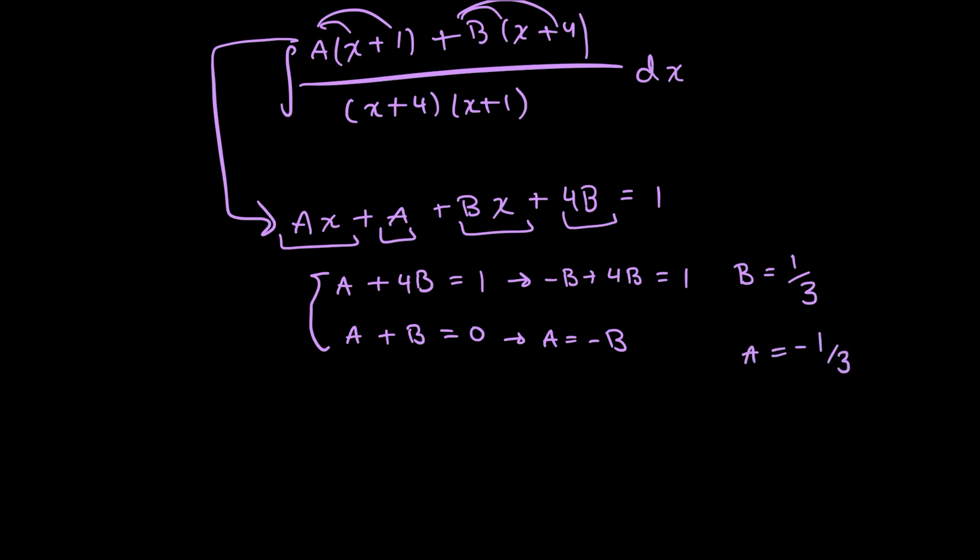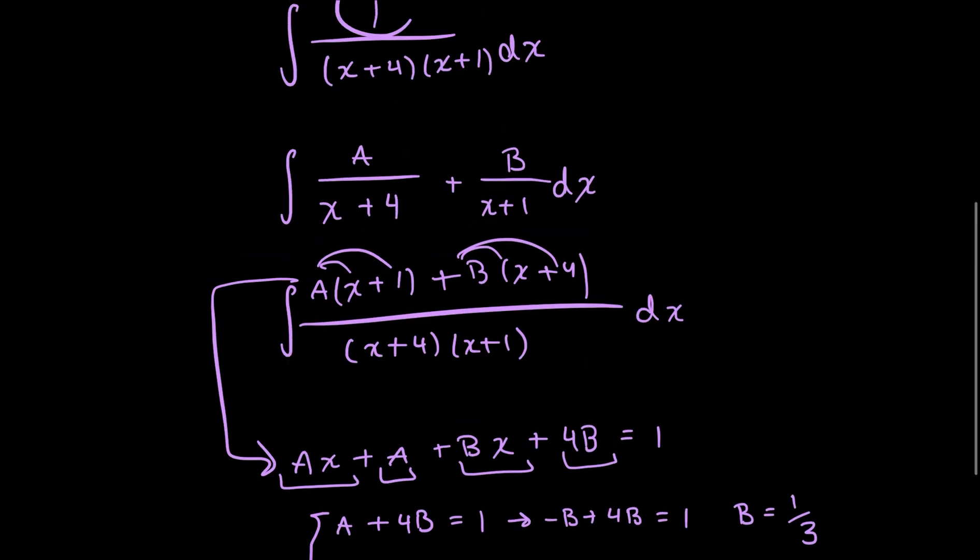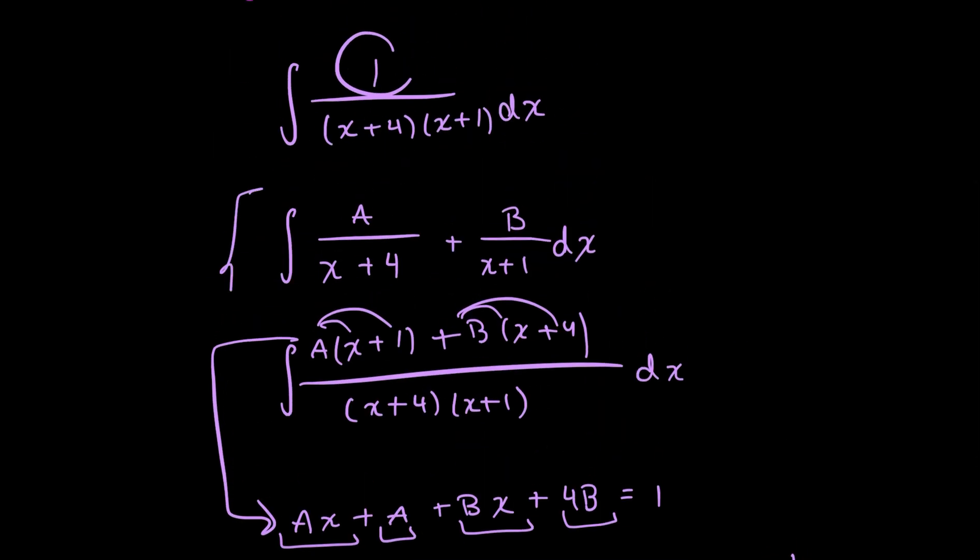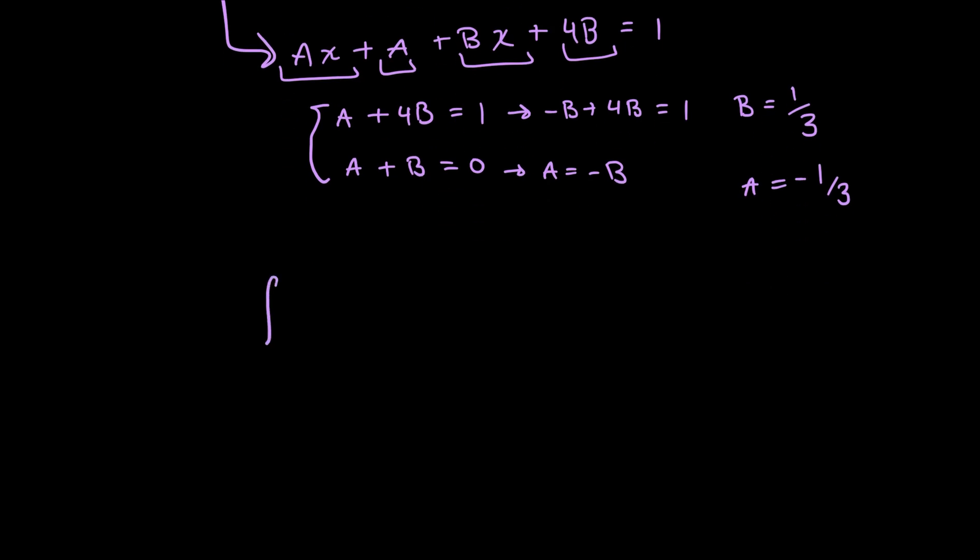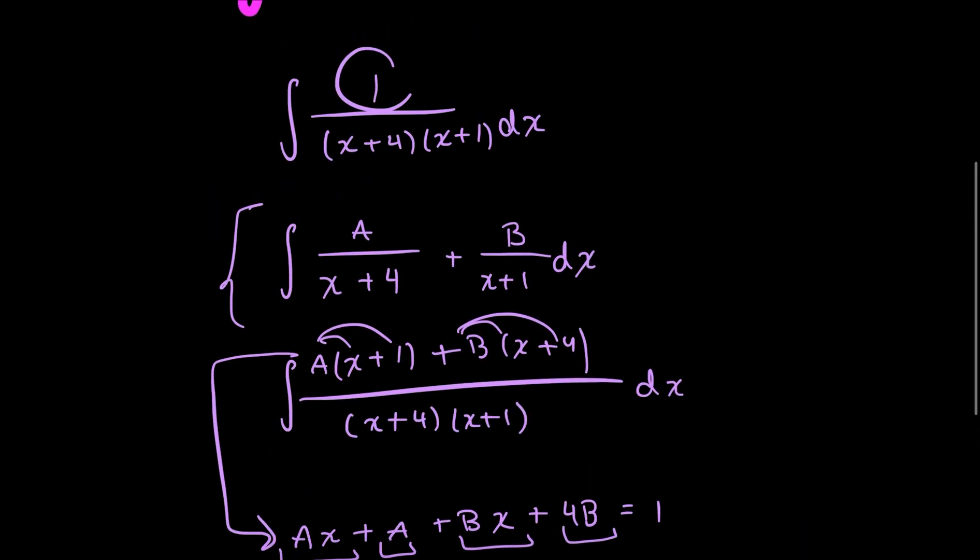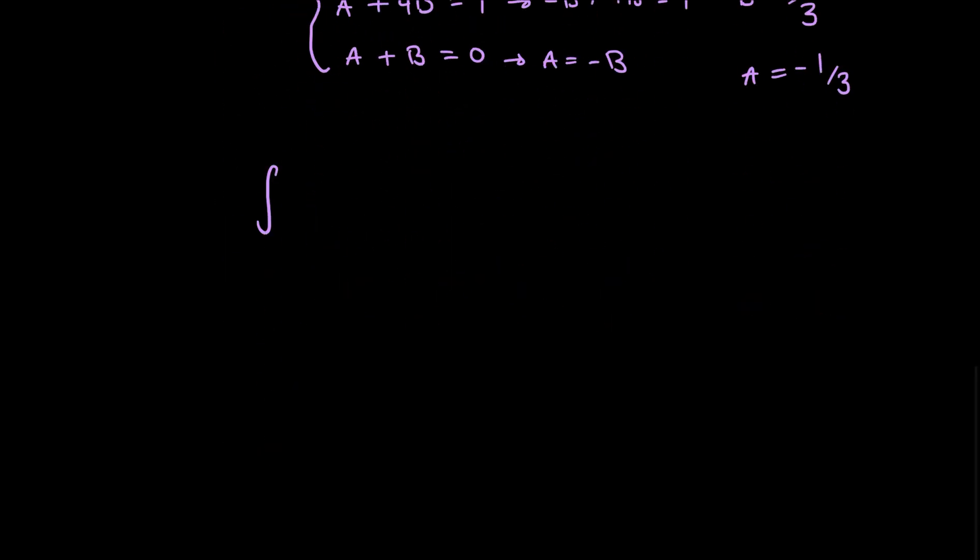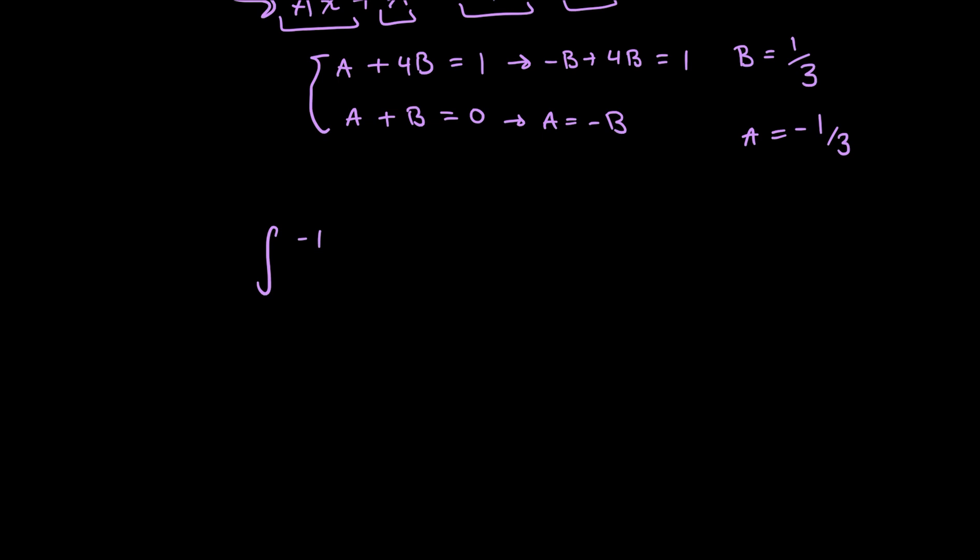Now that I've found my constants, all I have to do is just plug them back into their decomposed fractions. So at the same time, I'm going to put these into separate integrals because I think that's easier to solve or keep up with your work. But anyways, so I'd have negative 1 over 3 over x plus 4 dx plus the integral of 1 third x plus 1 dx.